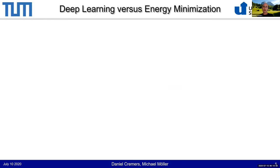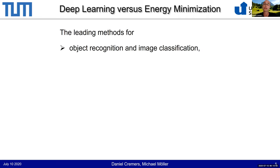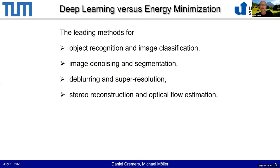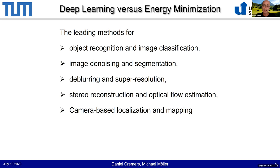What you see here is already a hybrid technique that integrates the best of both worlds — deep learning and energy minimization. This tutorial is about exploring ways to combine the advantages of both approaches. Today, the leading methods for denoising, segmentation, deblurring, super resolution, stereo, optical flow, and camera-based localization and mapping all involve some form of deep neural networks. That obviously raises the question: are the classical energy minimization methods to solving these problems all completely outdated? Should we give up what we've done before and start from scratch?